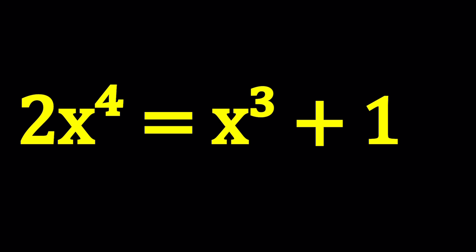Looks hard, doesn't it? Well, there's a way to make it easier. First of all, let's go ahead and put everything on the same side. Subtract x cubed plus 1 and set it equal to 0.